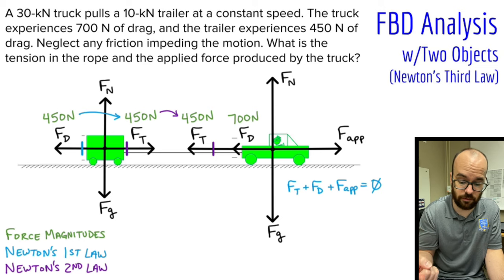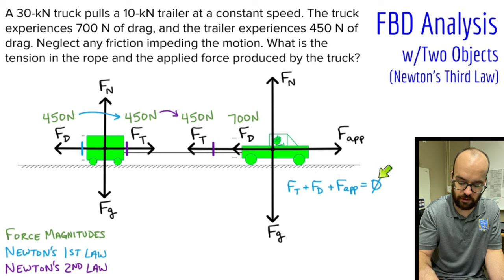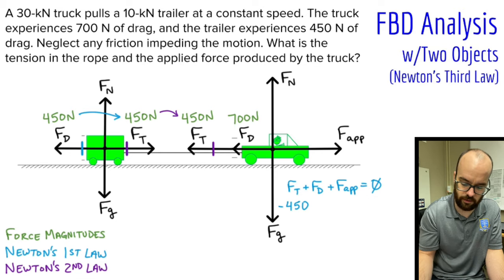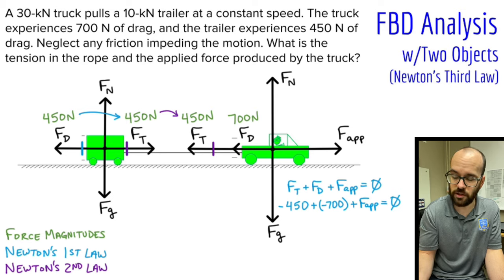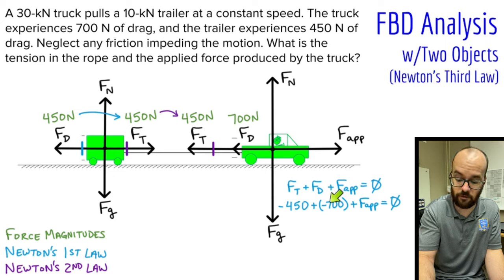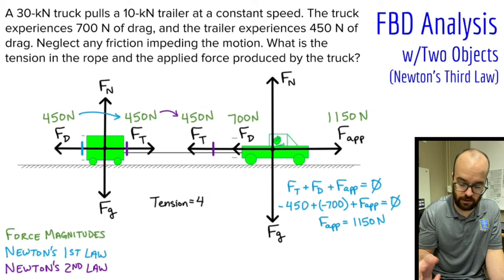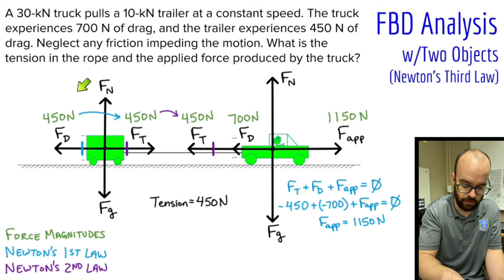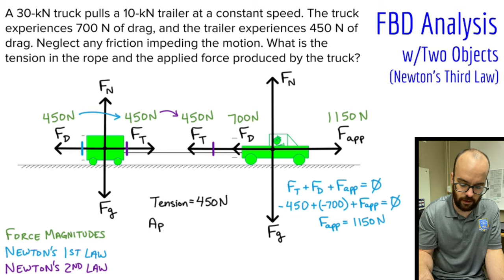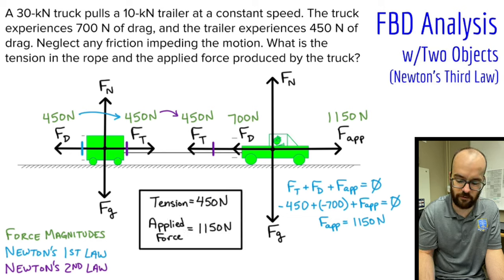Now I can return to Newton's first law for the truck. The three horizontal forces must sum to zero: negative 450 newtons (tension, leftward), negative 700 newtons (drag, leftward), plus the applied force equals zero. Negative 450 plus negative 700 gives negative 1150, so the applied force is 1150 newtons. My two final answers: the tension in the rope is 450 newtons, and the applied force is 1150 newtons.